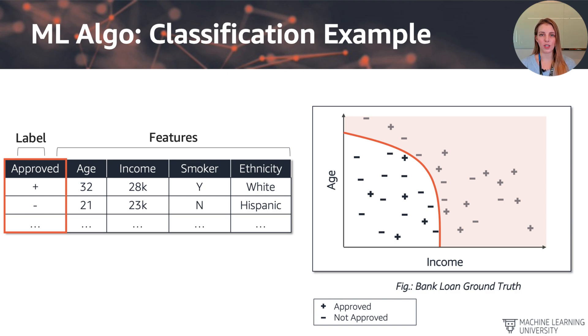So everything on the right hand side of the line, everything that's shaded in orange, that's going to be approved. And all the data points that fall to the left, those will be denied.